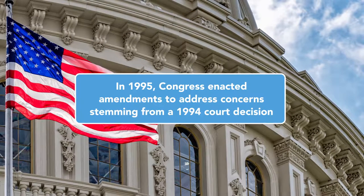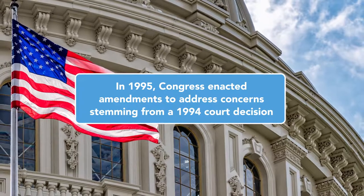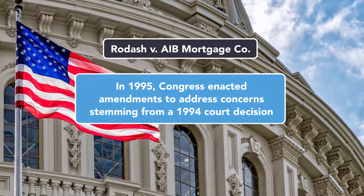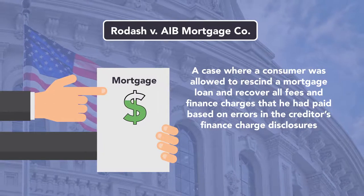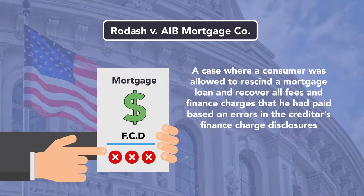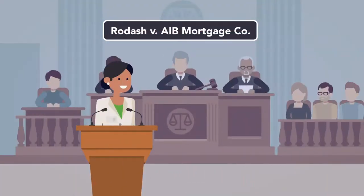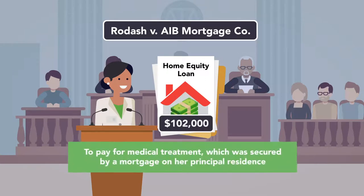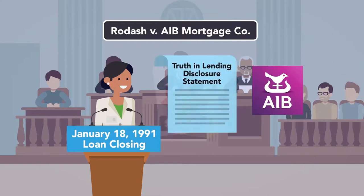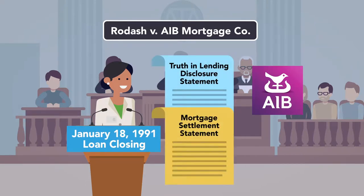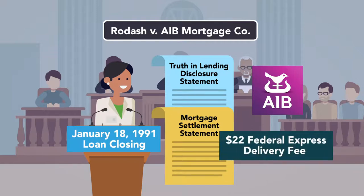In 1995, Congress enacted amendments to address concerns stemming from a 1994 court decision, Rodash v. AIB Mortgage Company, a case where the consumer was allowed to rescind a mortgage loan and recover all fees and finance charges that he had paid based on errors in the creditor's finance charge disclosures. The Rodash case involved a consumer who obtained a home equity loan of $102,000 to pay for medical treatment, which was secured by a mortgage on her principal residence. At the January 18, 1991 loan closing, AIB gave Rodash a Truth in Lending Disclosure Statement and a Mortgage Settlement Statement. The settlement statement reflected itemized charges, including a $22 Federal Express Delivery fee, itemized under Amount Financed in the transaction.